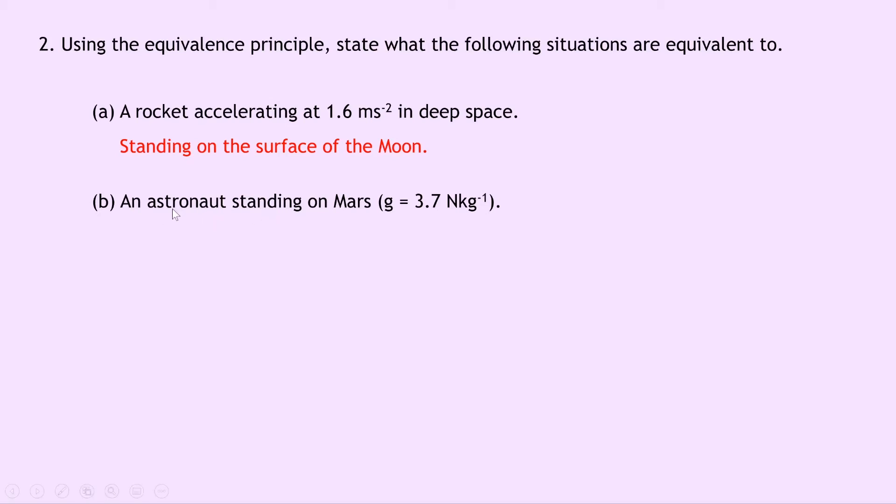And lastly, part B says an astronaut standing on Mars where g is equal to 3.7 newtons per kilogram. Well, this is just going to be like the question part in part A where we're dealing with a rocket accelerating. So this is the same as being in a rocket which is accelerating at 3.7 metres per second squared in deep space. Again, due to the equivalence principle.